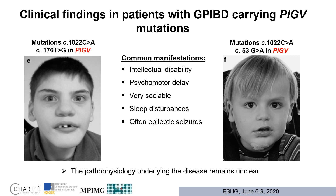Here on the slide you can see GPIBD patients that carry hypomorphic mutations in PIG-V. Most of the mutations are actually observed in the PIG-V gene. GPIBD patients are very sociable individuals. Common manifestations include intellectual disability, psychomotor delay, and sleep disturbances. They often develop epileptic seizures. However, the pathophysiology underlying the disease remains unclear.